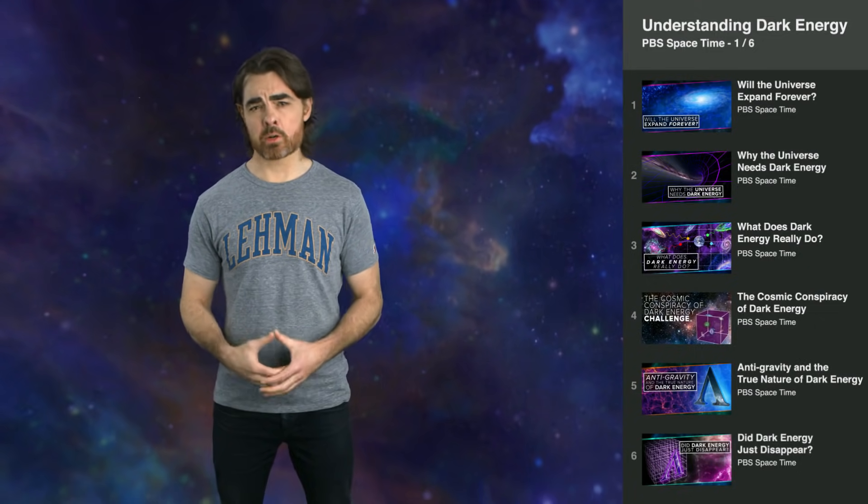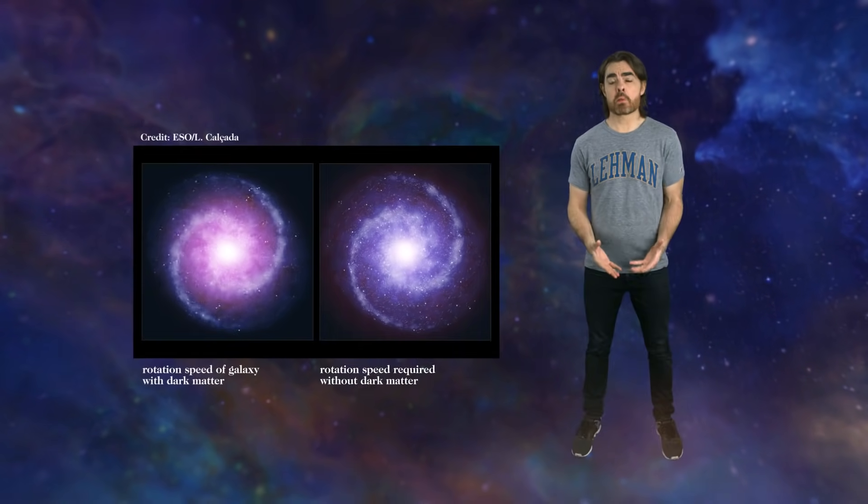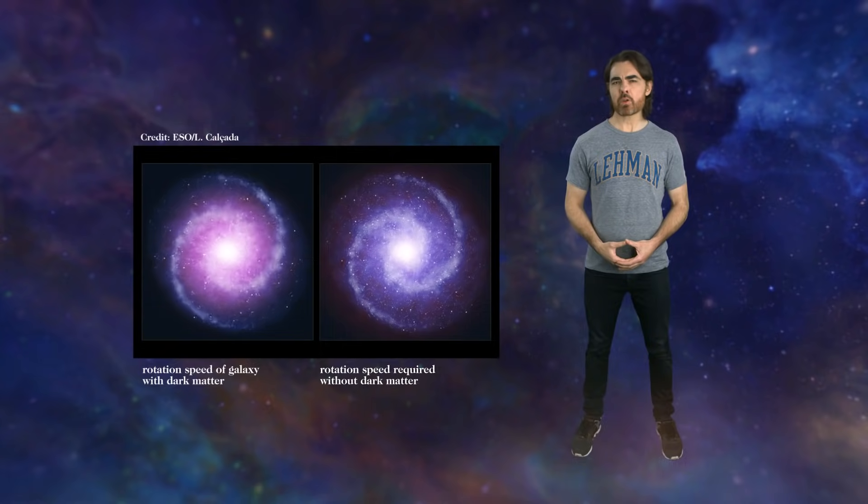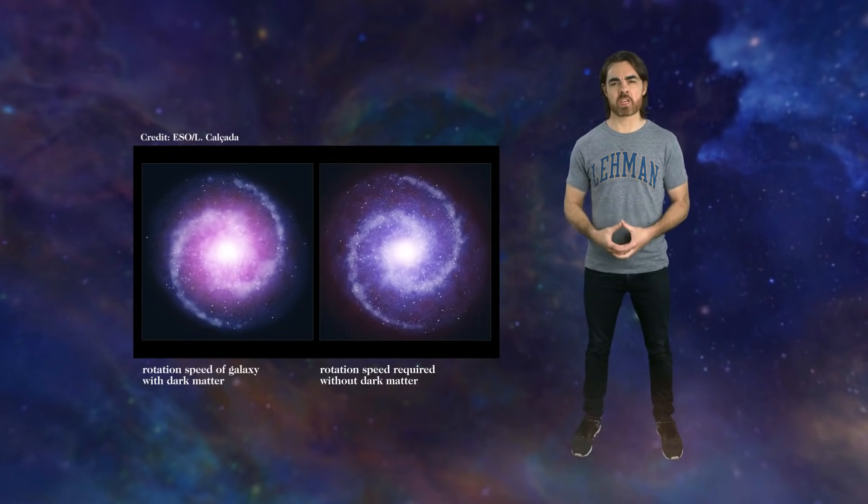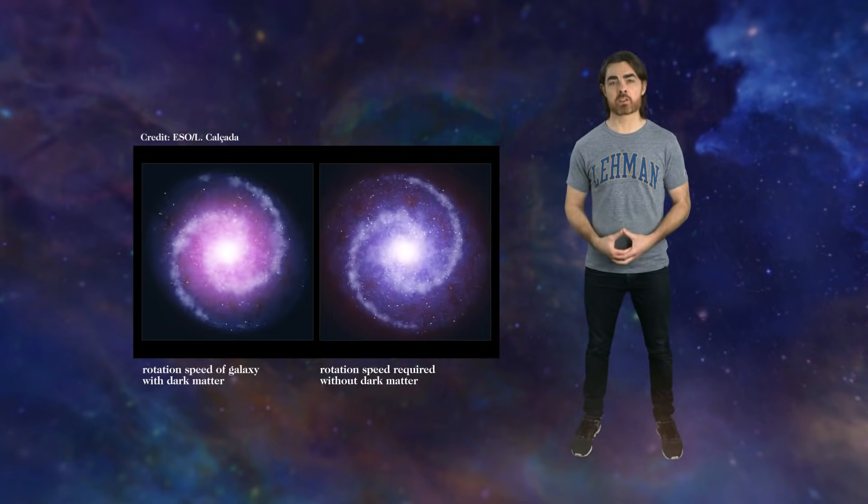This will be a true too-long-didn't-watch because we've been over both a bunch. So dark matter. The galaxies are spinning too fast. Based on the gravity from visible matter alone, they shouldn't be able to hold themselves together. They should scatter their stars into the void.